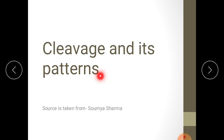In the last video we discussed what is fertilization. After fertilization, a zygote is formed. Zygote is a single cell stage in embryonic development. It is diploid in chromosomal makeup.